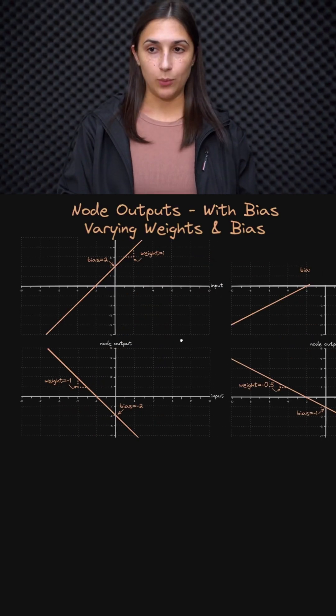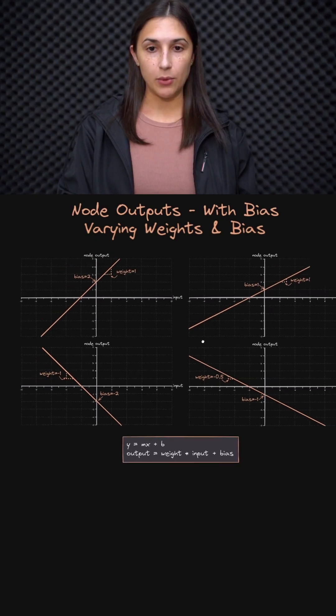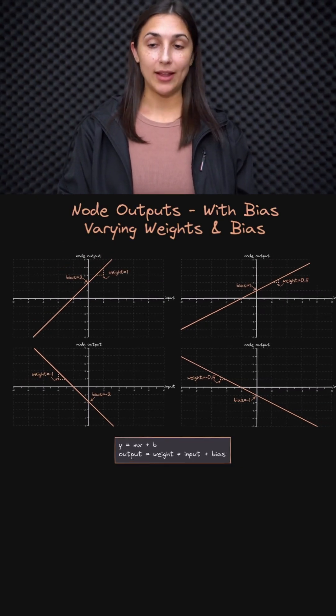So if we zoom back out, we won't go through all of these examples again, but we can get the point that we can vary both the weight and the bias term, and that's going to influence the graph of the output.